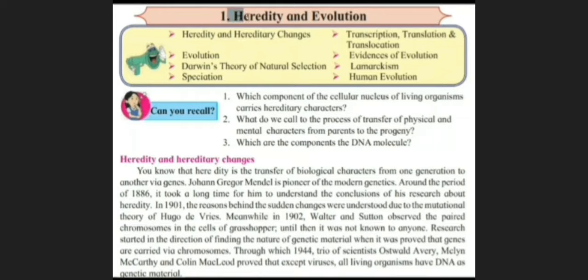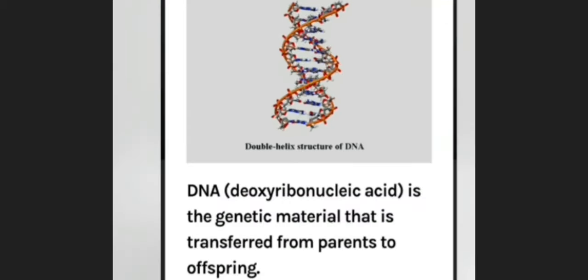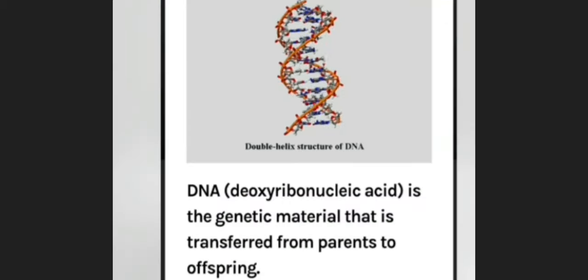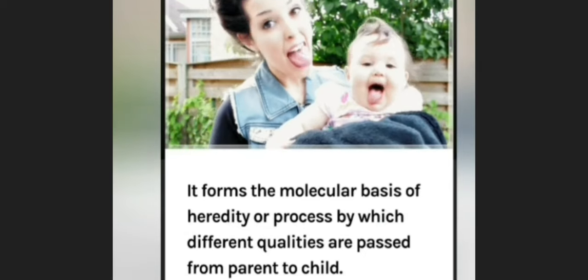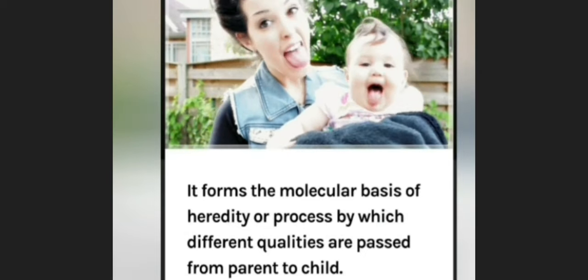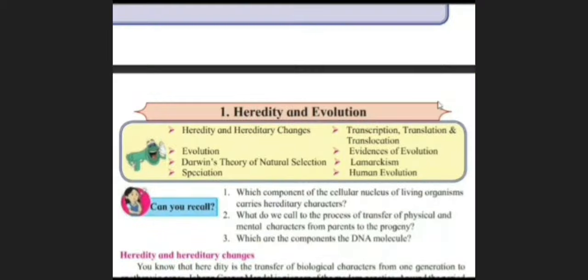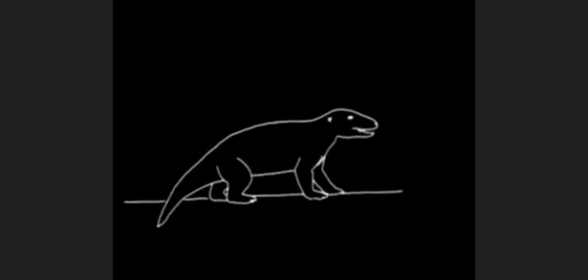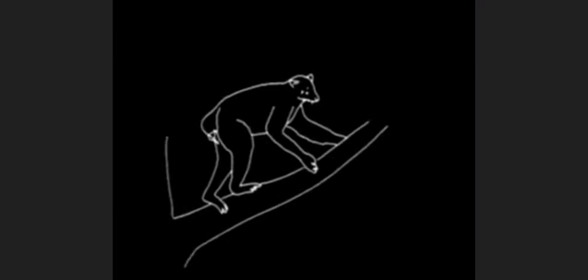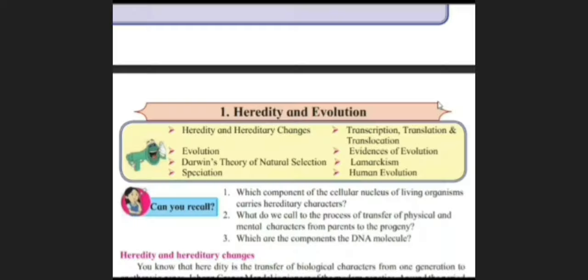Here you have to first of all clear the concept about Heredity and Evolution. Heredity, that is nothing but the transfer of genetic material from parents to their offspring. Evolution, it is gradual changes that occur in living organisms over a long duration. Here there is a relationship between Heredity and Evolution.